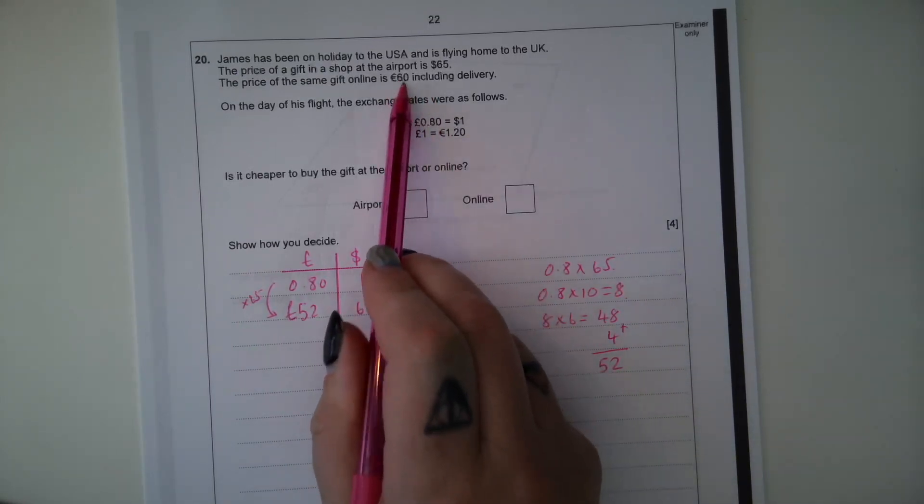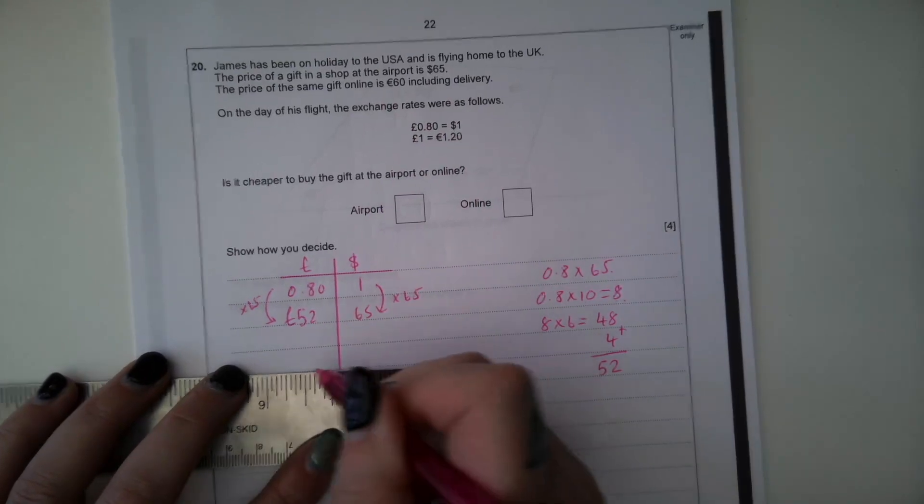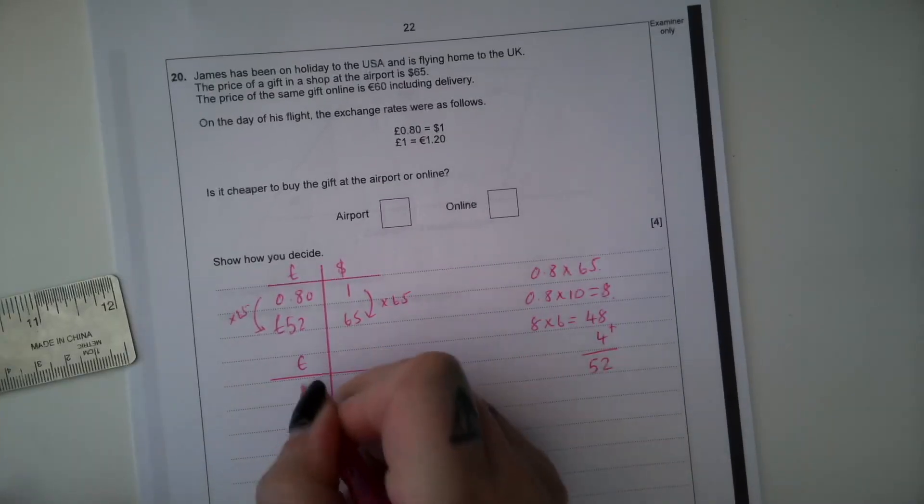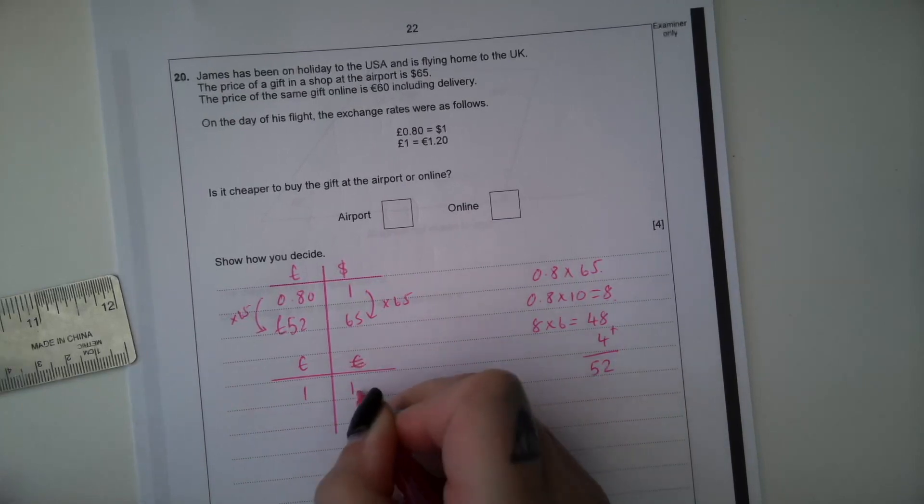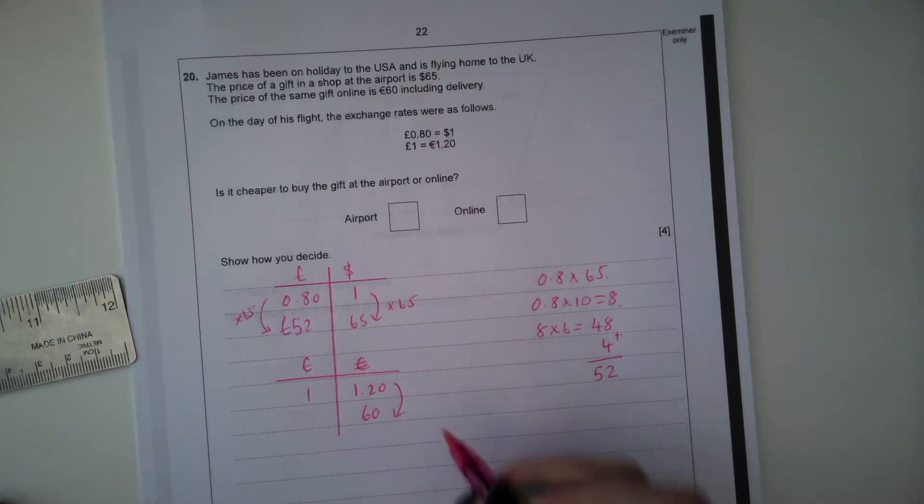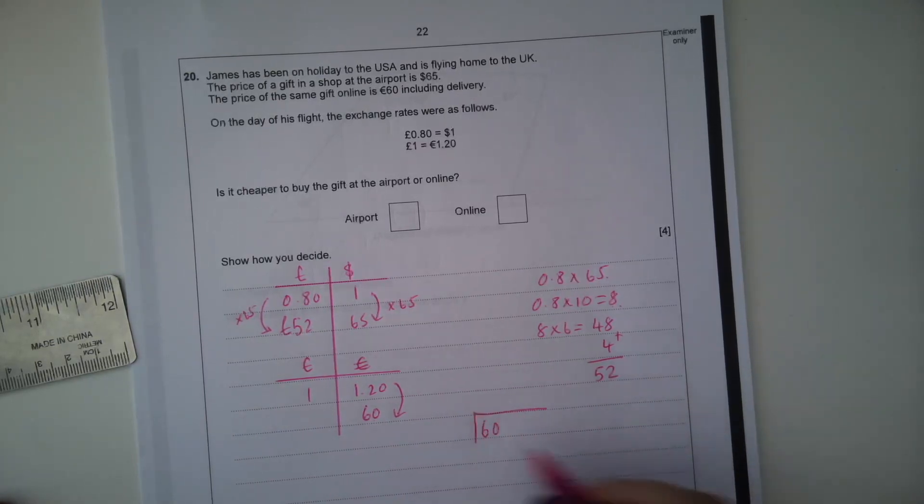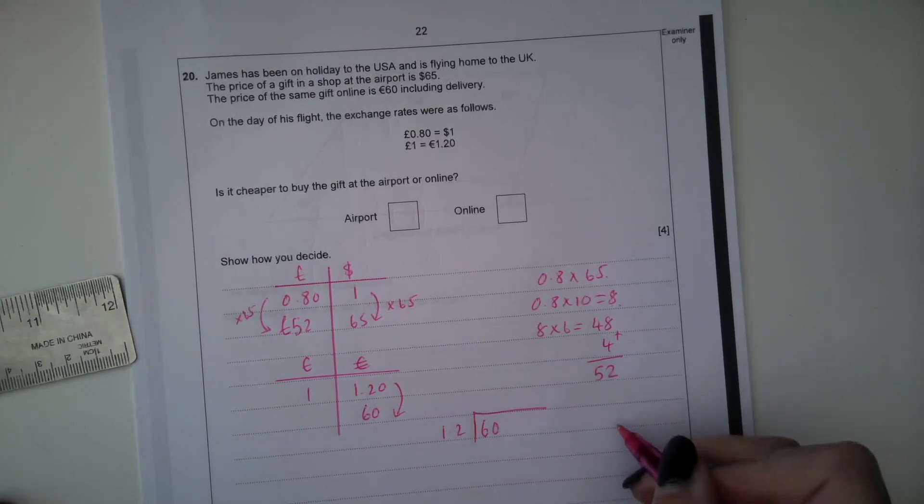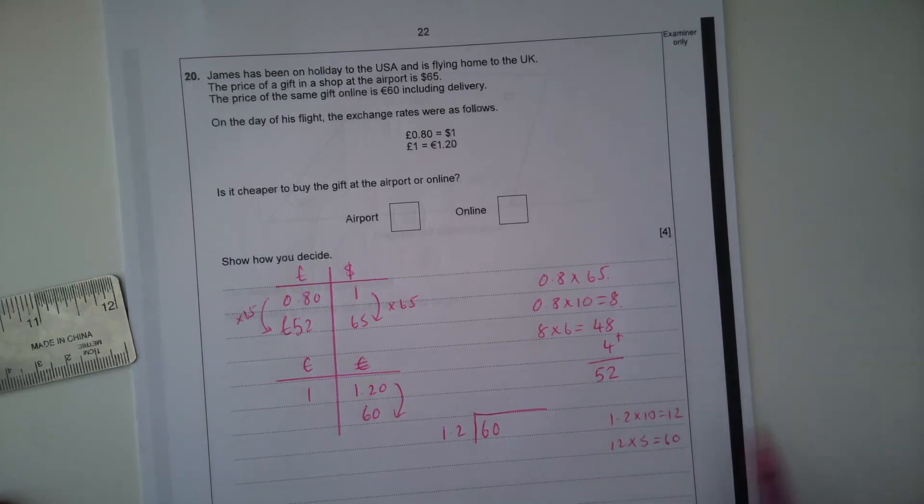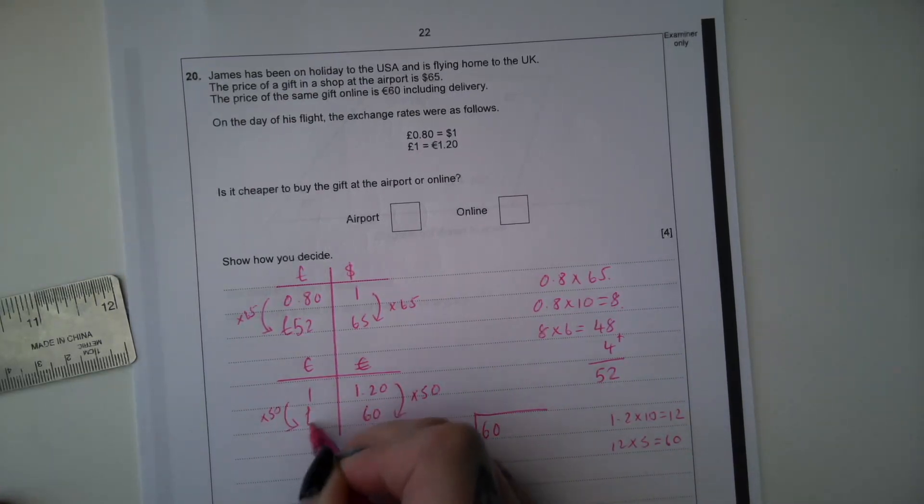Now we are going to convert the euros to pounds. So let's just add onto this table here. So we've got £1 is 1.2 euros. So if we've got €60, we need to figure out how to go from 1.2 to 60. So we are going to do 60 divided by 1.2. So 1.2 times 10 is 12 and 12 times 5 is 60. So 10 times 5 must be 50.